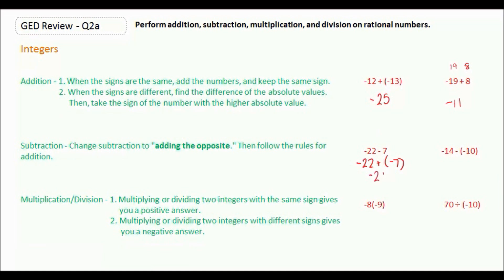Negative 14 minus negative 10 is the same thing as negative 14, change the subtraction to addition, and the opposite of negative 10 is positive 10. So now we're adding. The signs are different, we're going to find the difference, so the difference between 14 and 10 is 4.